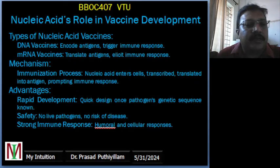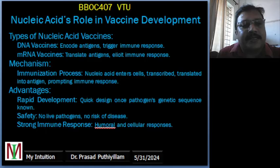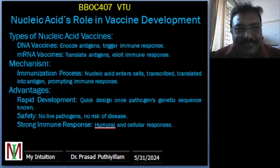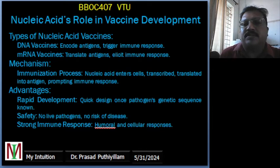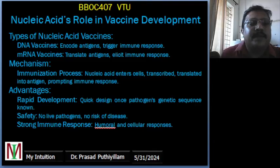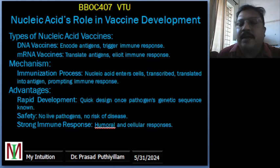mRNA vaccines, on the other hand, use mRNA encoding the antigen. Once injected, the mRNA is translated by the host cell to produce the antigen, which elicits an immune response. Examples of mRNA vaccines include the COVID-19 vaccine developed by Pfizer-BioNTech, as well as Moderna's vaccine, which is actually called mRNA-1273.